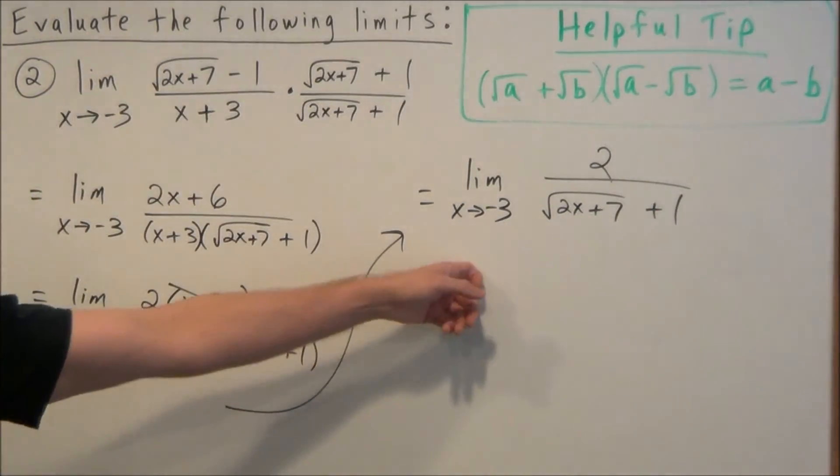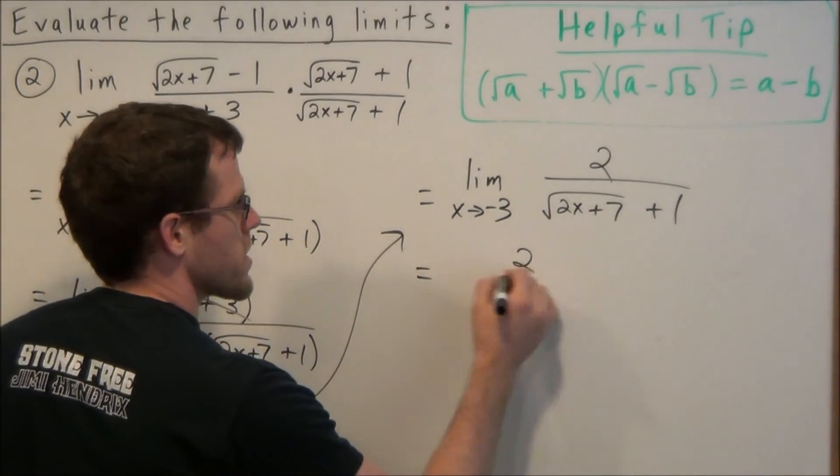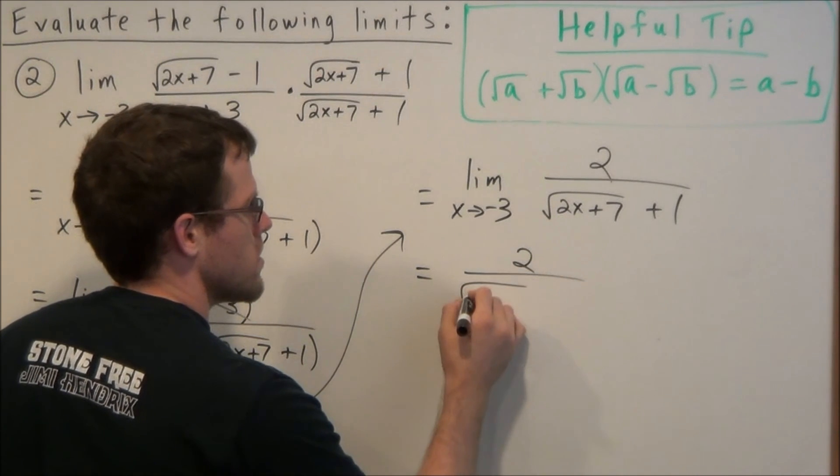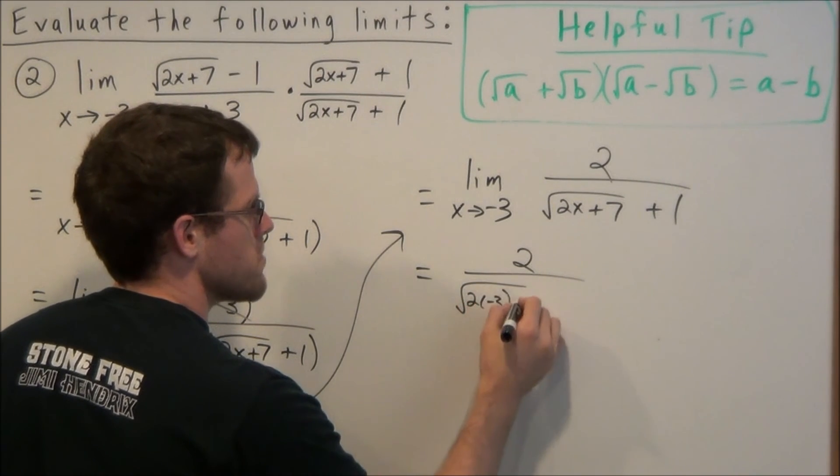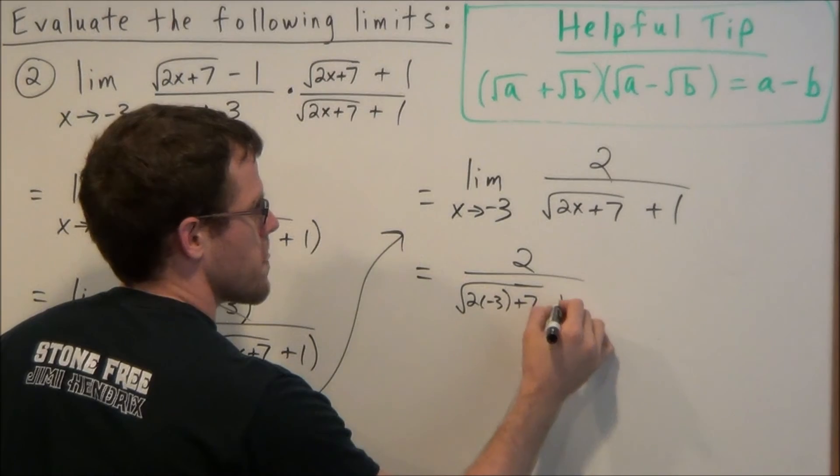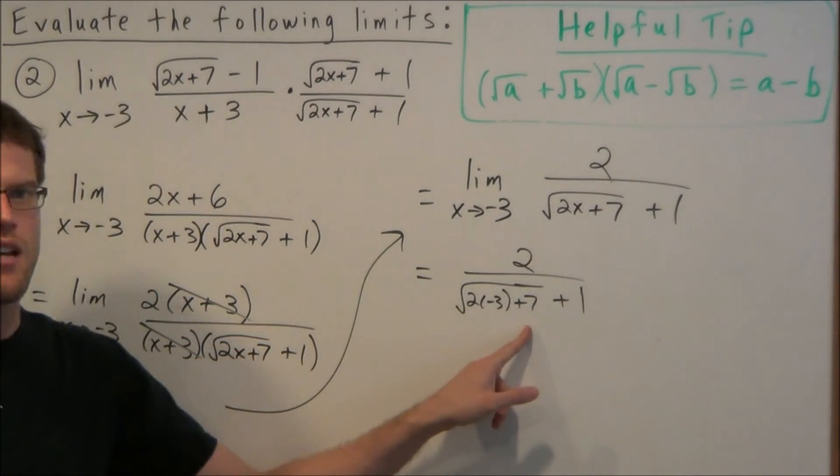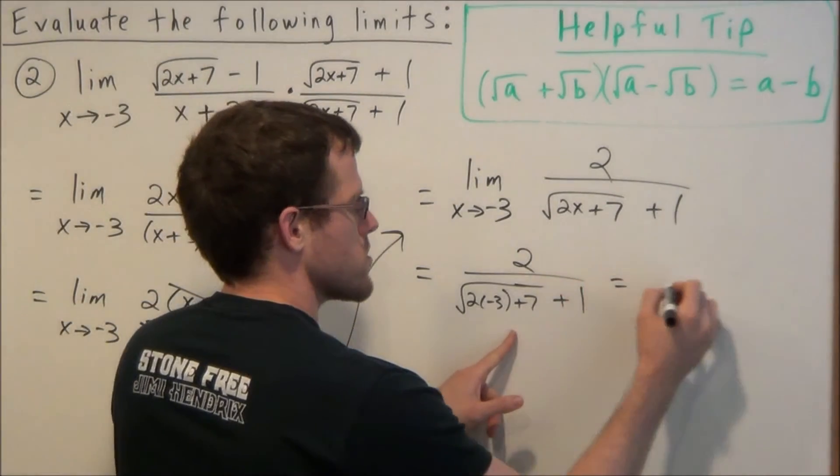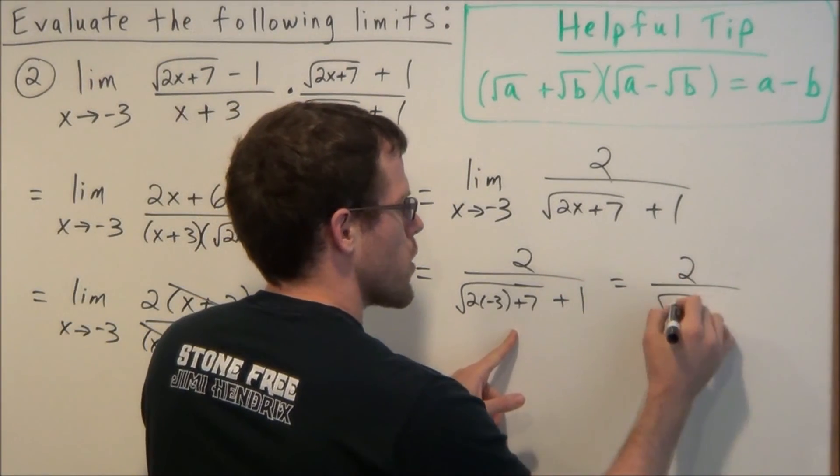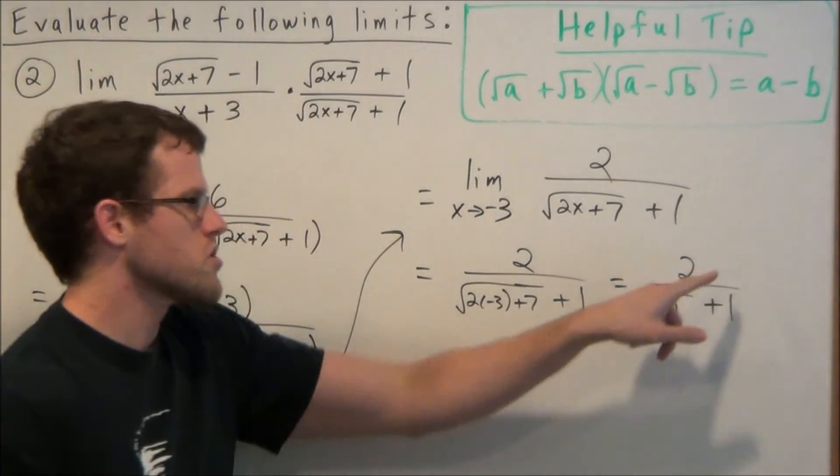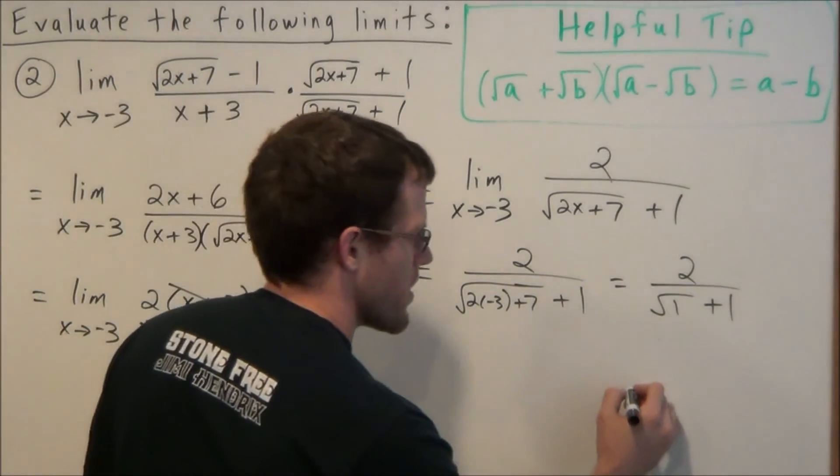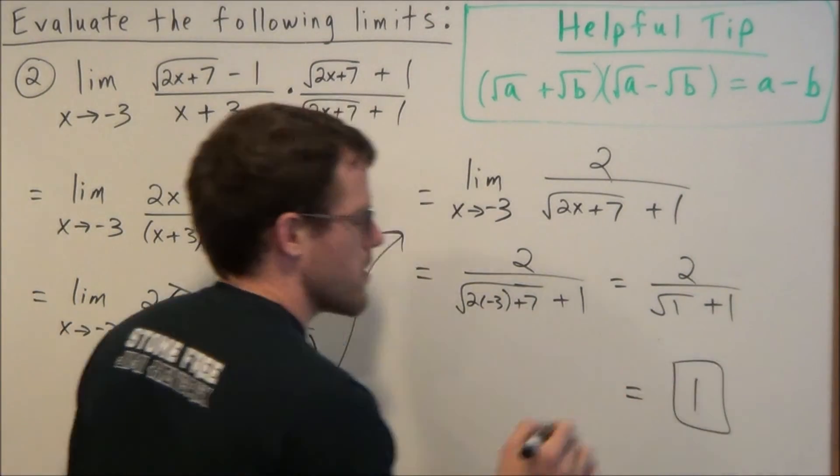So now we're ready to plug in. We plug in x as negative 3, and we're going to get 2 over 2 times negative 3 plus 7 under the radical, and then plus 1. But notice here, this is going to give us negative 6 plus 7, which is going to give us the square root of 1. So this is now 2 over the square root of 1 plus 1, which is 2 divided by 2, and 2 divided by 2 is equal to 1.